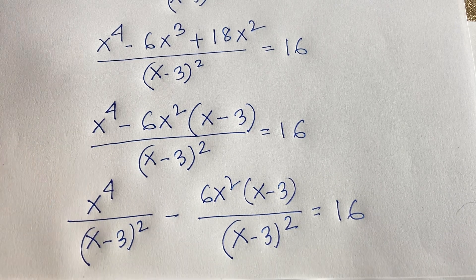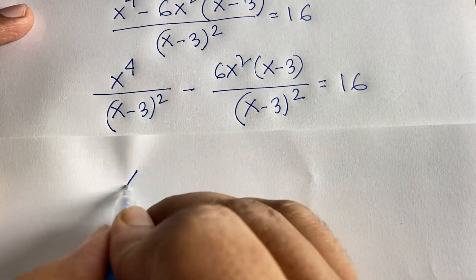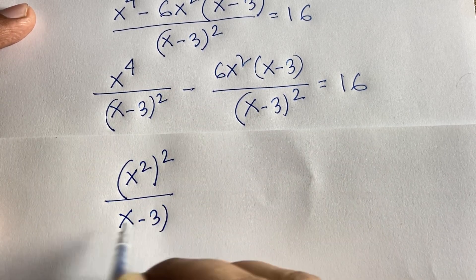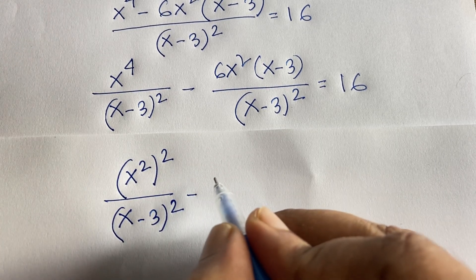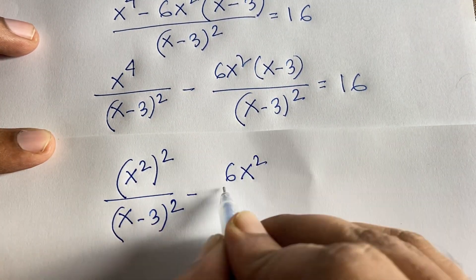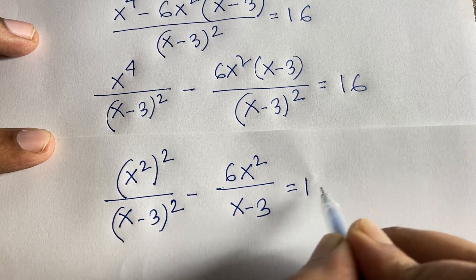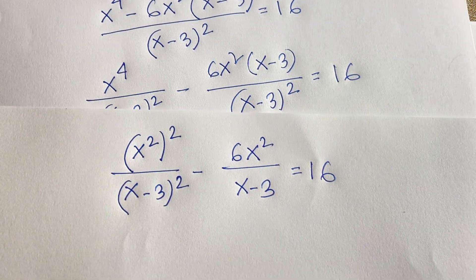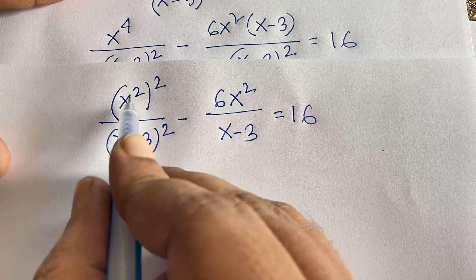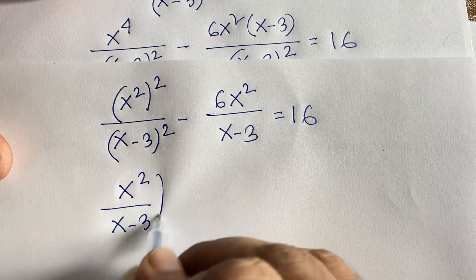Notice that x⁴ = (x²)². So we have (x²)²/(x-3)² minus 6x²/(x-3) = 16. This first term can be written as (x²/(x-3))², and the second term has x²/(x-3). So we get (x²/(x-3))² - 6·(x²/(x-3)) = 16.